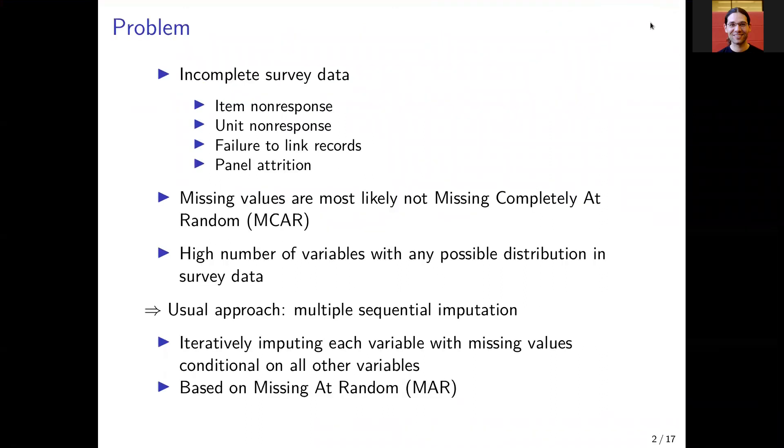So what's the problem? We face incomplete survey data due to multiple reasons. For example, we have item non-response and unit non-response, and sometimes we fail to link data from different sources. There's also panel attrition in panel data, for example.